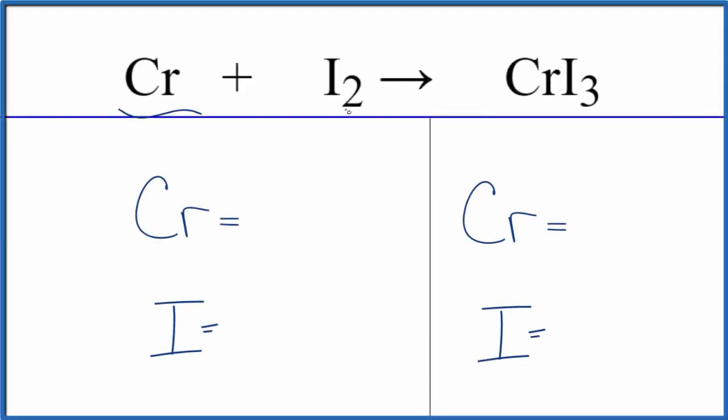Let's balance the equation for Cr plus I2. This is chromium metal and then we have iodine gas. We end up with chromium 3 iodide. This is a combination or a synthesis reaction. We have two things coming together to form one.